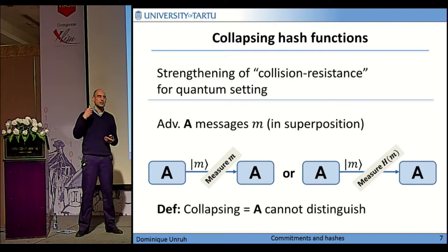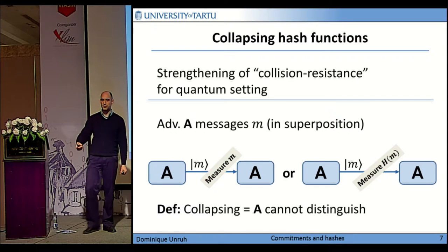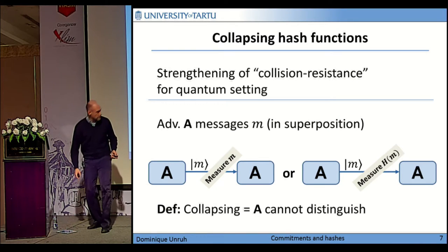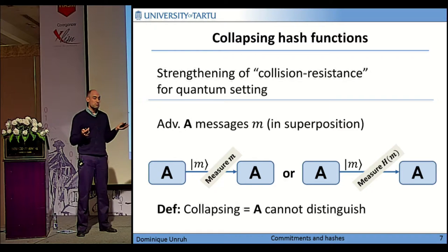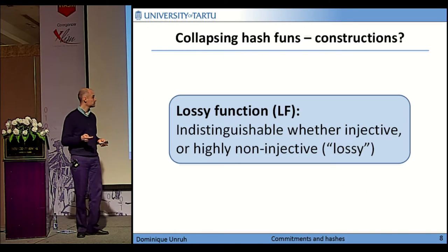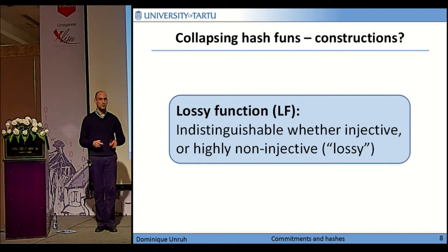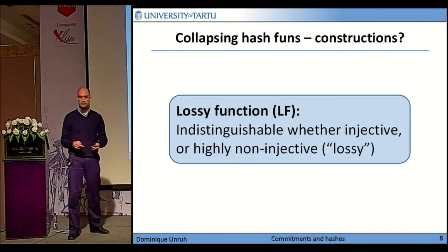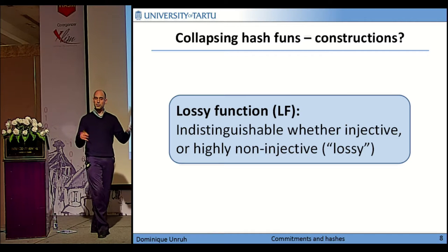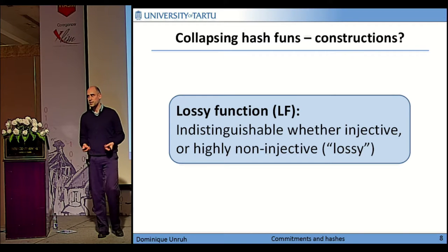Basically, the hash function is supposed to look as if it wasn't possible to send a superposition of different messages with the same hash. So that's the vision, and now the question: do they exist? I will sketch the construction that we found on a high level.